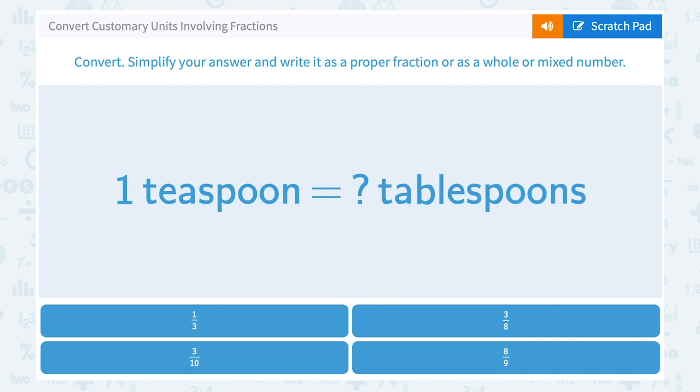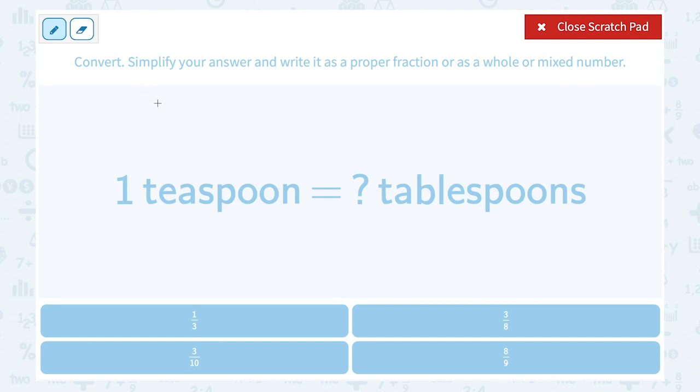One teaspoon is equal to how many tablespoons? So again, we need to know our conversion factor. That one teaspoon... well actually, let's write it this way. There are three teaspoons in one tablespoon.